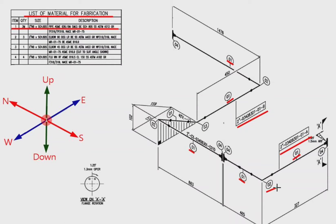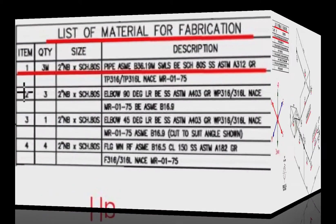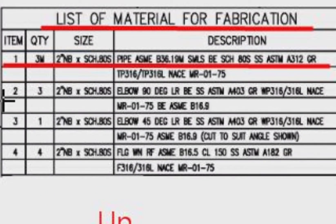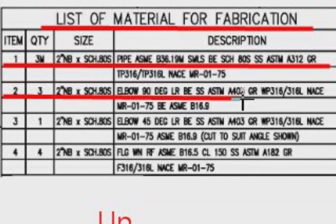Detail number two: the quantity is 3 pieces, 2 inches schedule 80S elbow, 90 degree, long radius. The material is stainless steel.